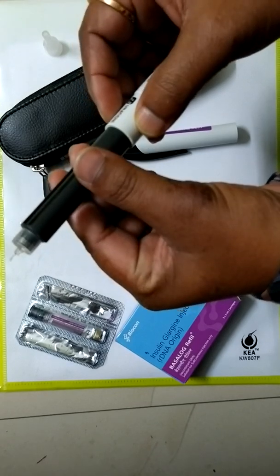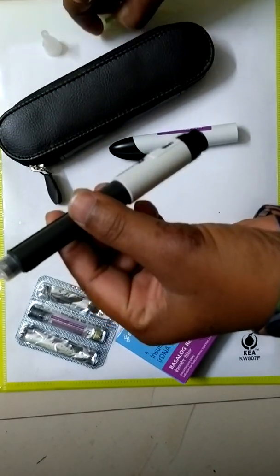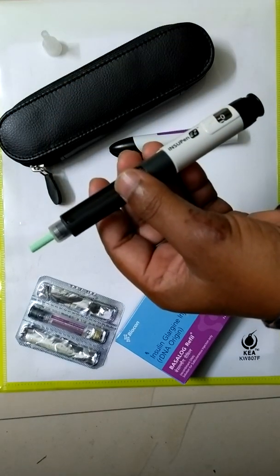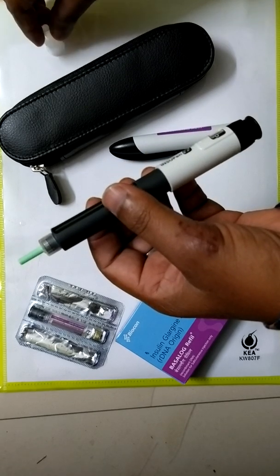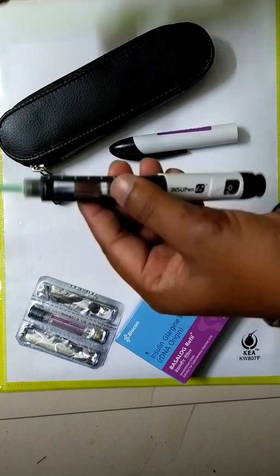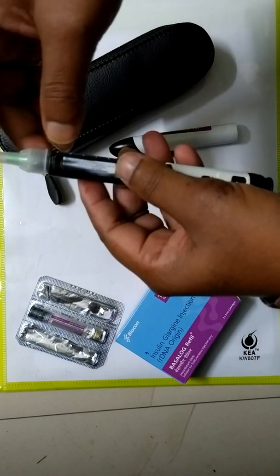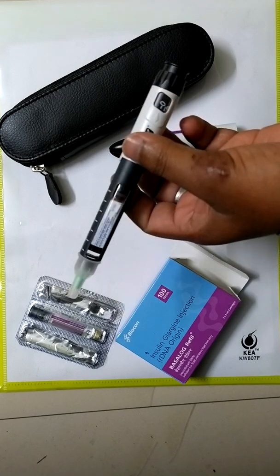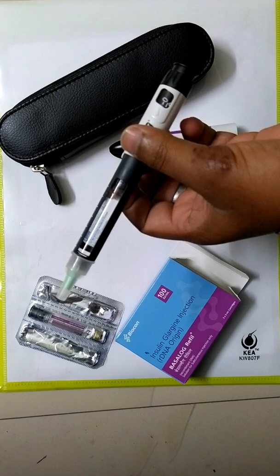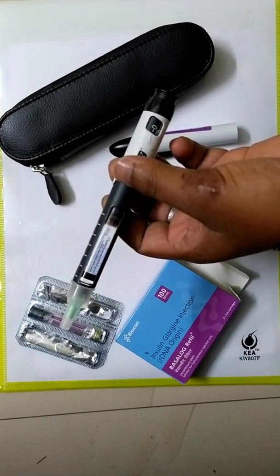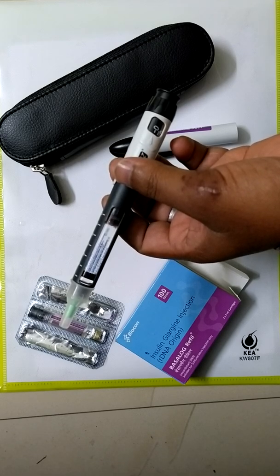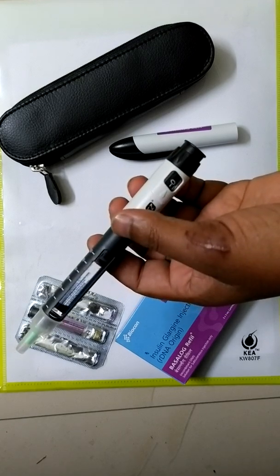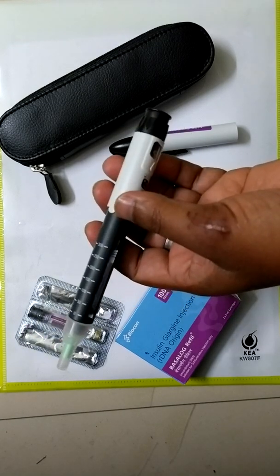You can use this insulin pen for your aged parents or who is diabetic patient. And always keep the pen in a fridge after use. Before use, keep the pen out from the fridge about 30 minutes before and use the pen. And friends, thank you for watching this video.